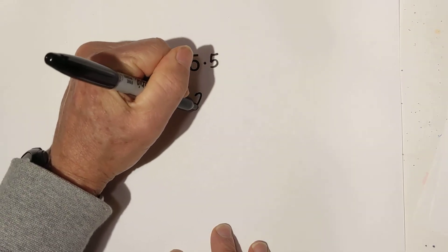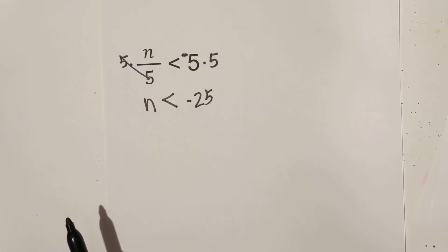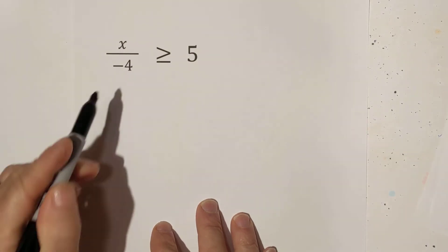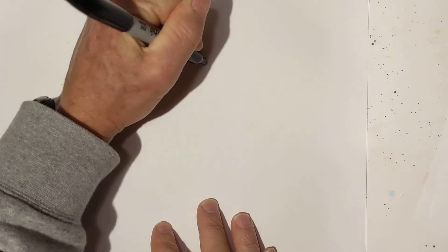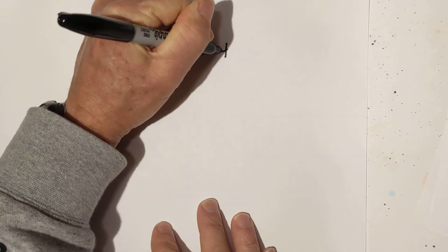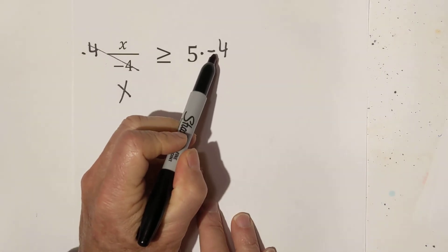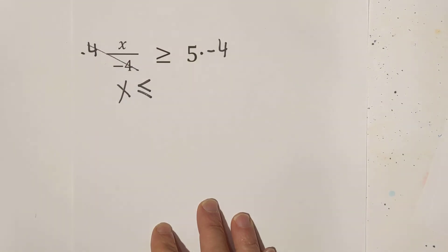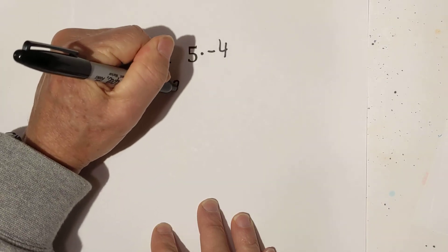So negative 25 would be the answer, and the sign stays the same. Let's work one more example where we do flip the sign. Often you'll encounter something like this. Let's get x by itself — we have division, so we're going to multiply each side by negative 4. These cancel, bring down the x. We are multiplying by a negative number, so we're going to flip the sign. 5 times negative 4 is negative 20.